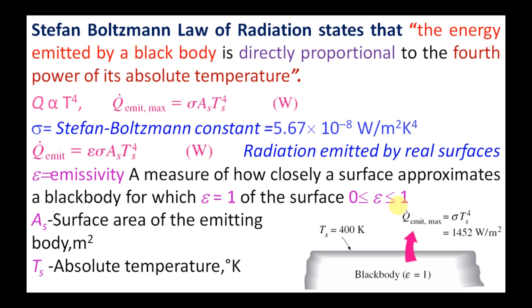A_s is the surface area of the emitting body in terms of meter square. And T_s is the absolute temperature in degree Kelvin. It should be in degree Kelvin.